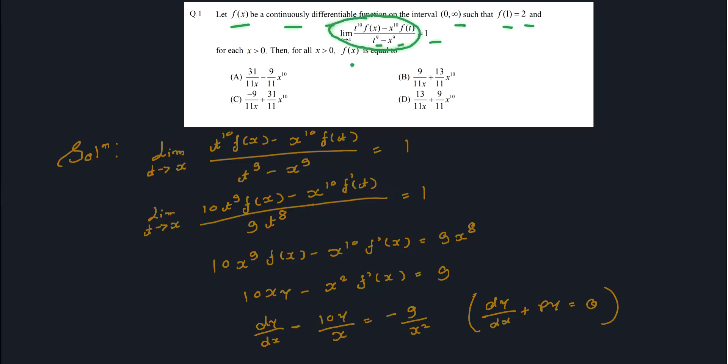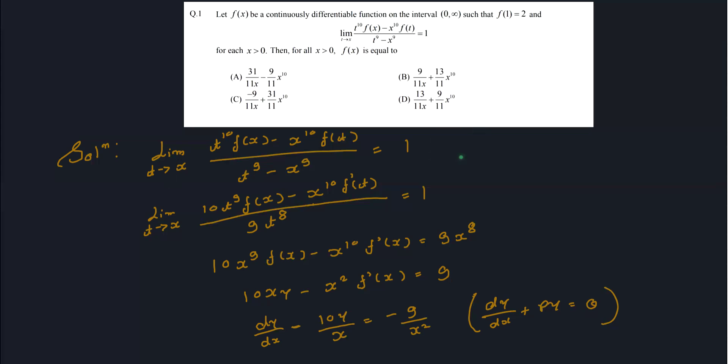जब x की value observe करते हैं, तो पता चलता है कि जब t की value x plug-in करेंगे तो यह 0/0 का form आएगा। इस case में हम L'Hôpital's rule use कर सकते हैं। L'Hôpital's rule apply करेंगे: limit t tends to x, numerator और denominator को t के साथ differentiate करेंगे।